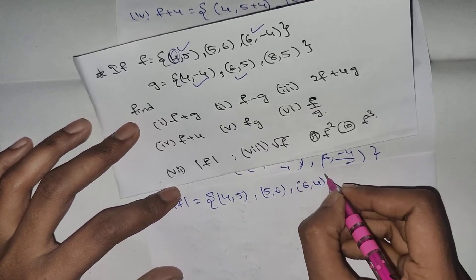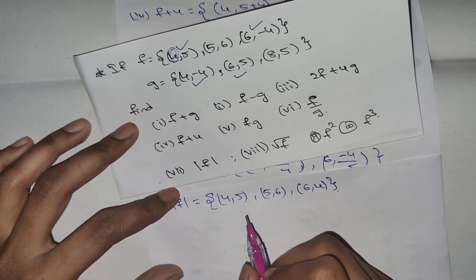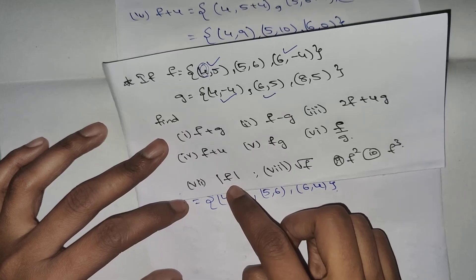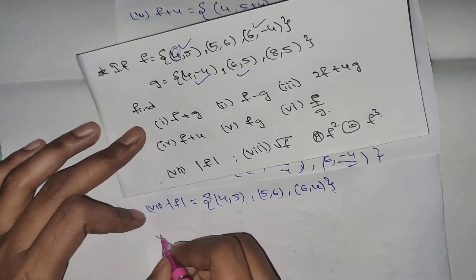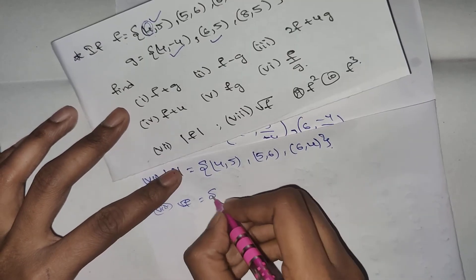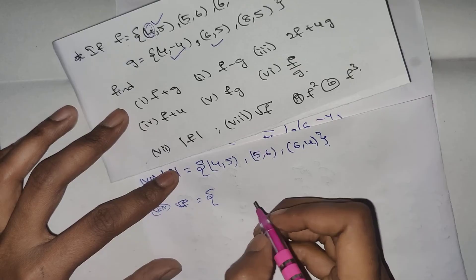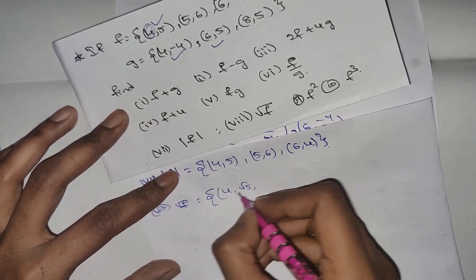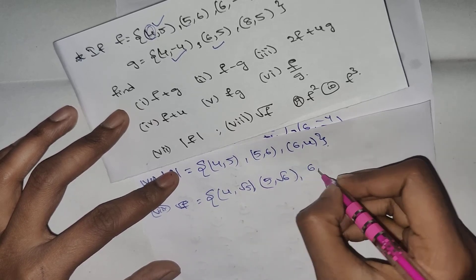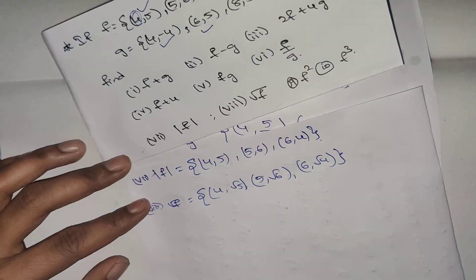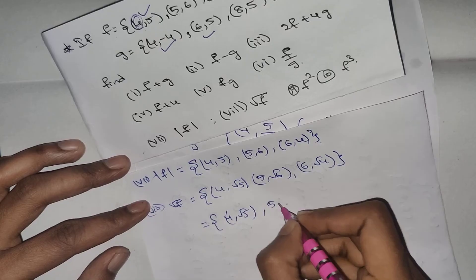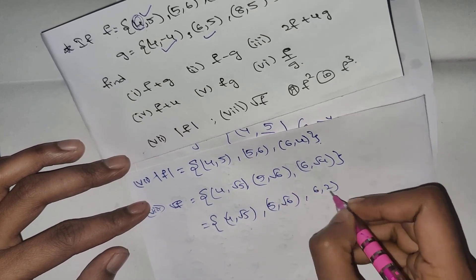Every time we have to consider the first time, we have to consider the second time. So if you want to know that the first time is f, we consider root f. This is the second time root 1. If f is 5 — (4, root 5), (5, root 6), (6, root 4) — the answer is: four comma root five, five comma root six, six comma two.